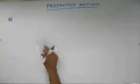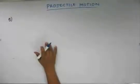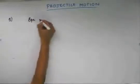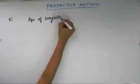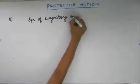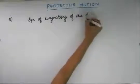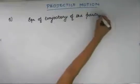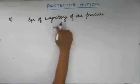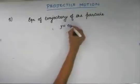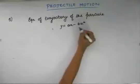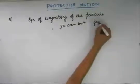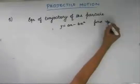In the fifth problem, the equation of trajectory of the particle is given and we are asked to find the velocity of the particle. The equation of trajectory is given as y equals to x minus bx squared, and we are asked to find the initial velocity, find u.